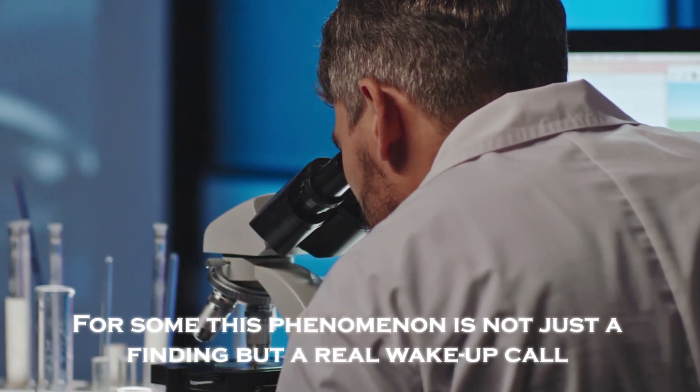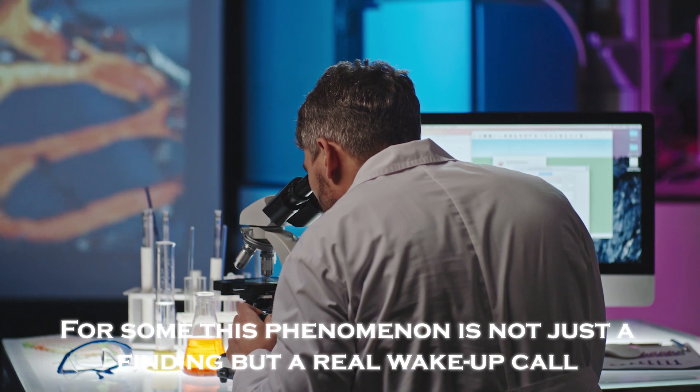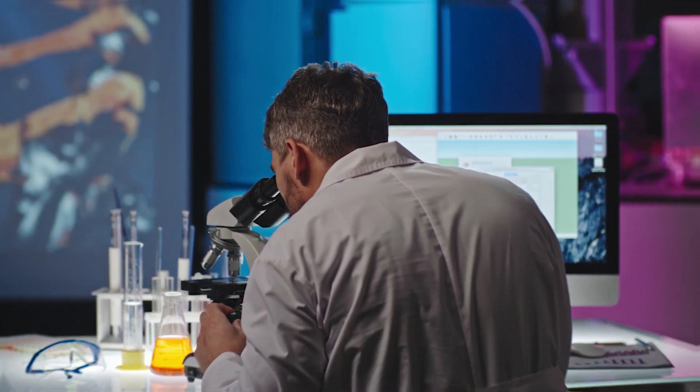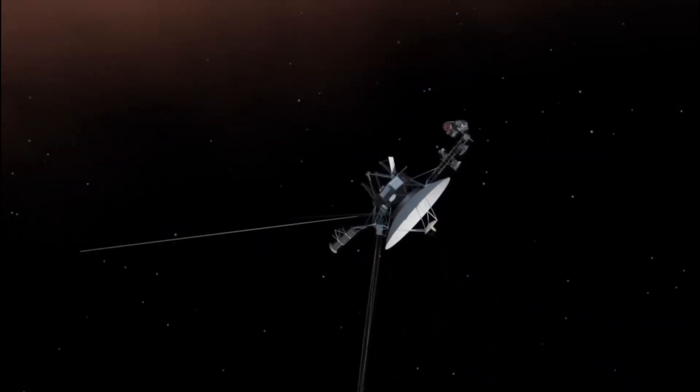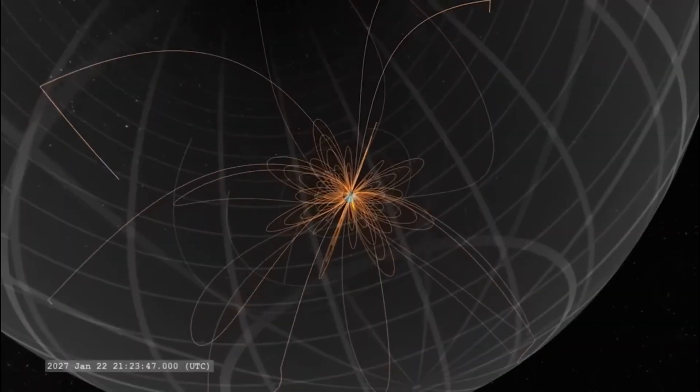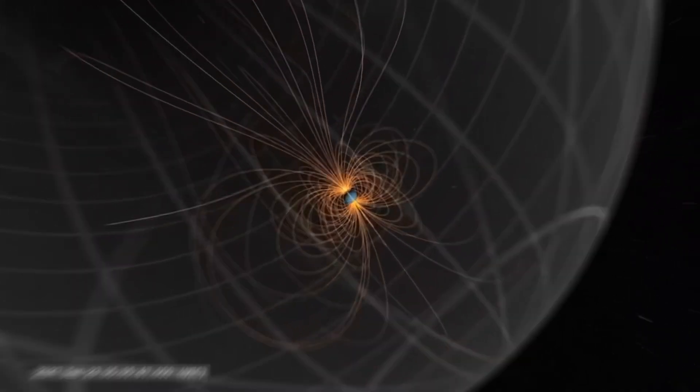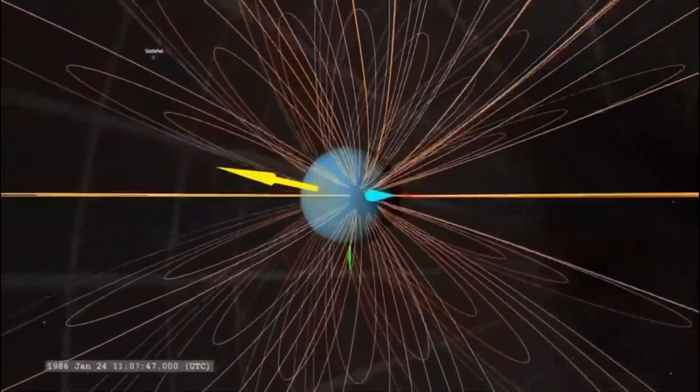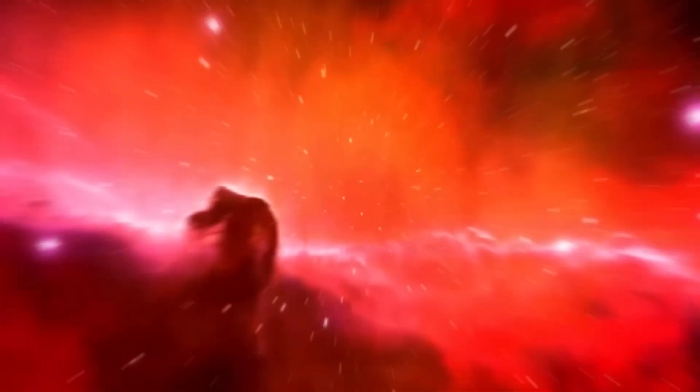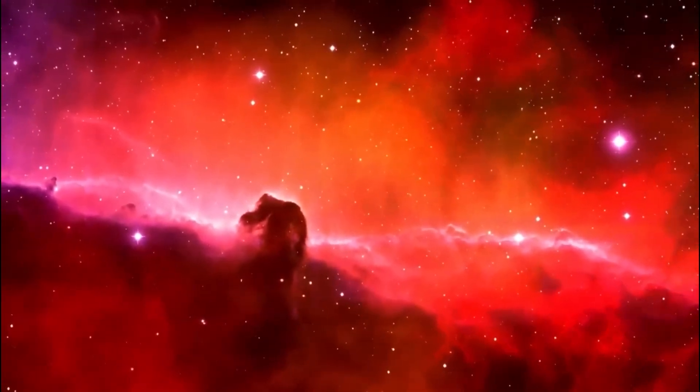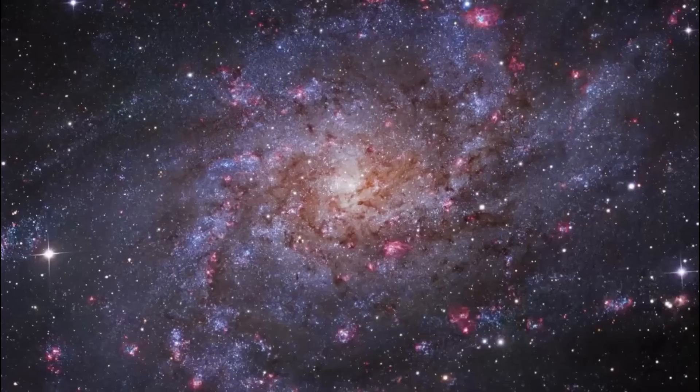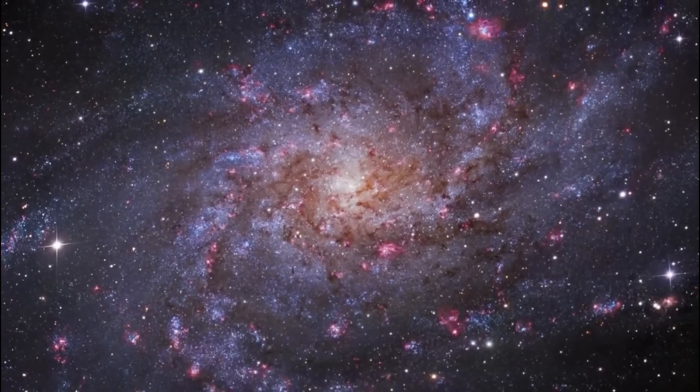For some scientists, this phenomenon is not just a finding, but a real wake-up call. Voyager 1 may be discovering an energy grid or something similar at the edge of our solar system. If these energy streams exist, we are seeing for the first time how the solar system connects to the galaxy on a scale we had not anticipated. This could radically change our understanding of energy in the universe.